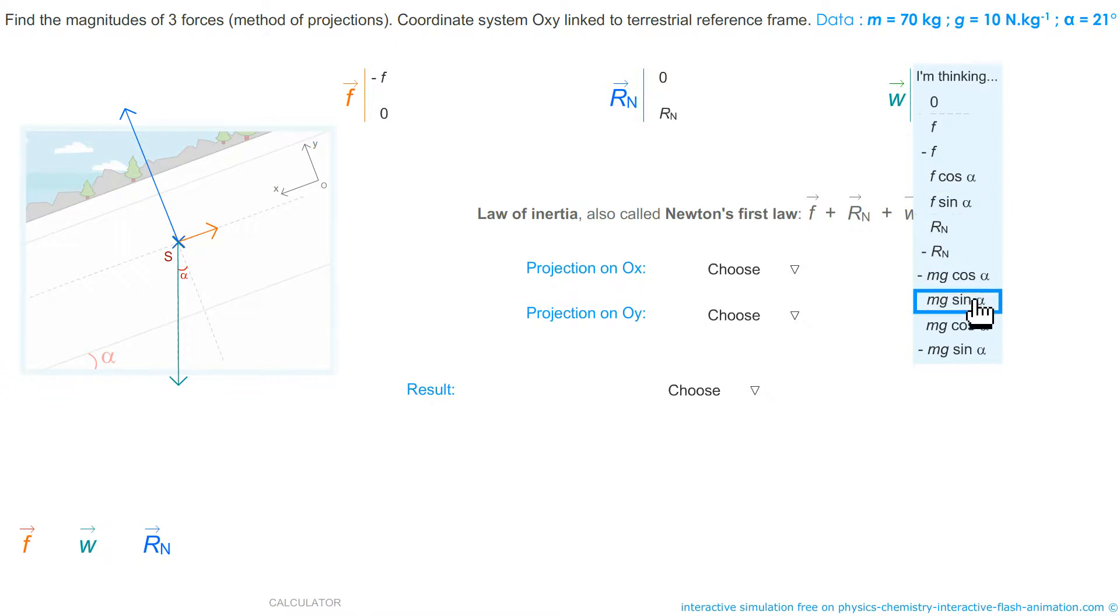For the weight therefore, we spoke about it earlier. In X, Mg times the sine of alpha. Y sinus, because I do the projection on the opposite side. And so you may have already understood, minus Mg times the cosine of alpha for the projection here. The minus sign is because O-y here is upwards.